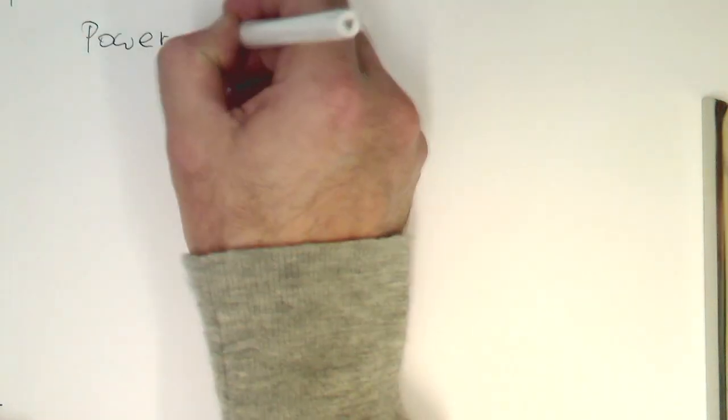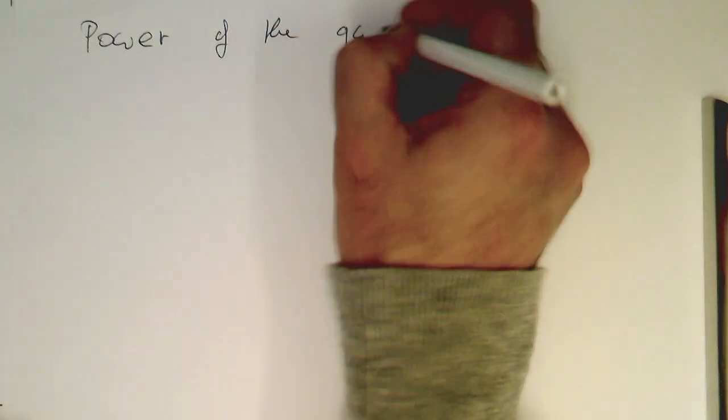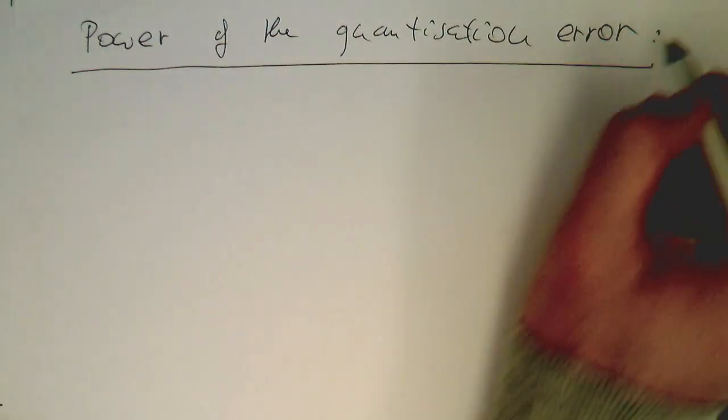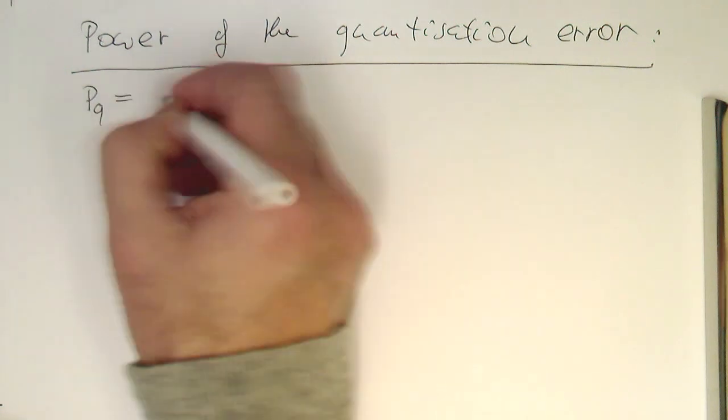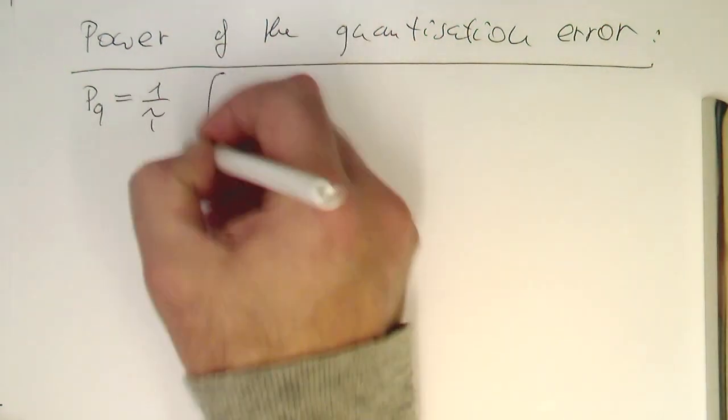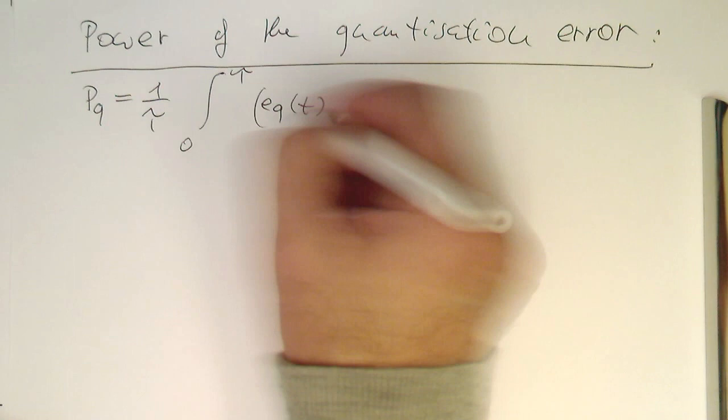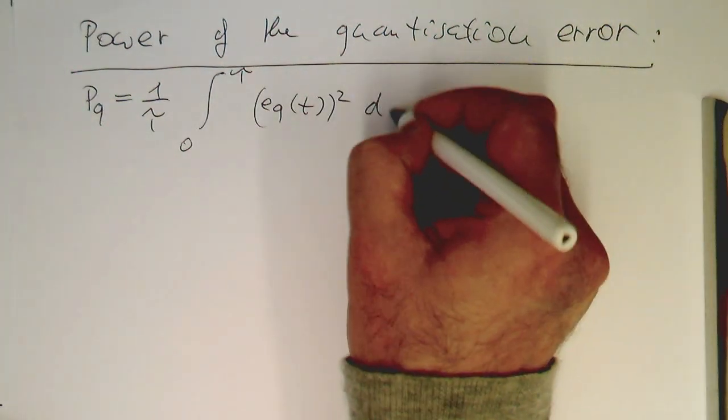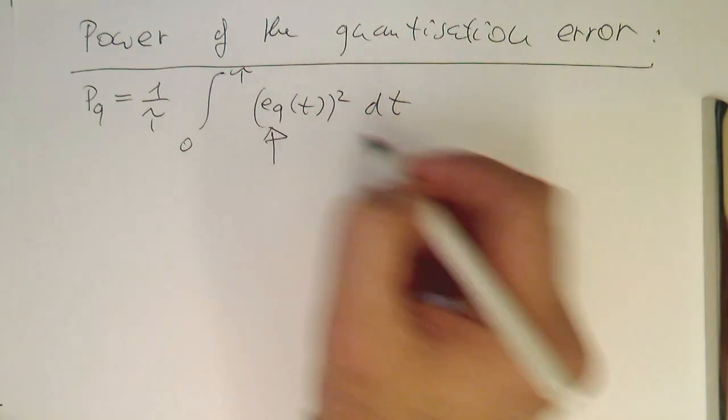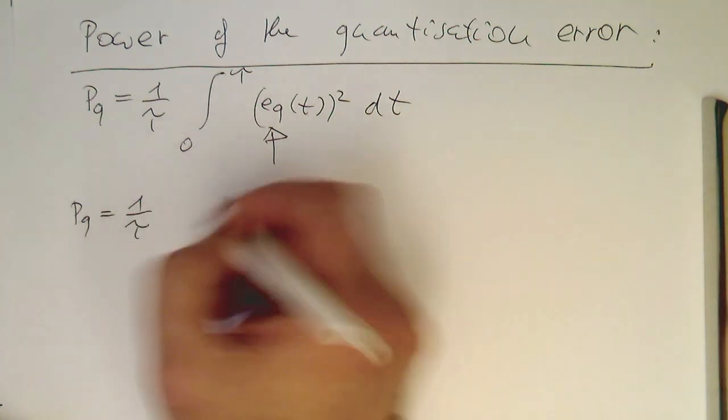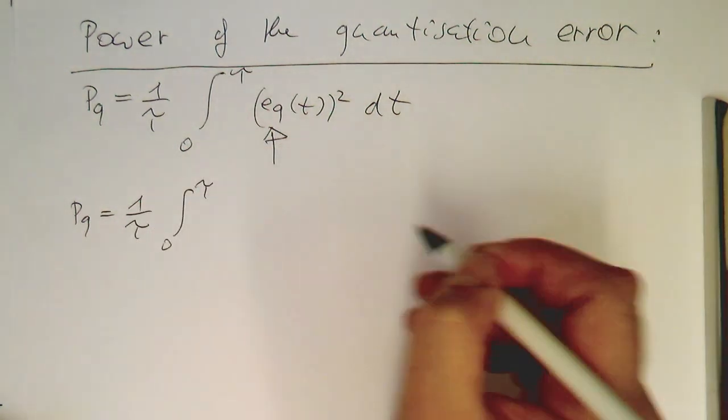Let's calculate now the power of the quantization error. The power is defined as P_q equals one over tau, then integrated from zero to tau, and then e_q of t squared dt. We just need to substitute our e_q into this.